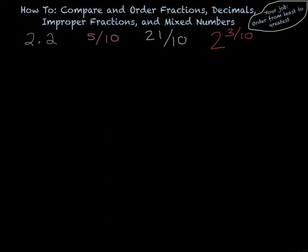We have the following numbers: 2 and 2 tenths, 5 tenths (it's a fraction), the improper fraction 21 tenths, and the mixed number 2 and 3 tenths.